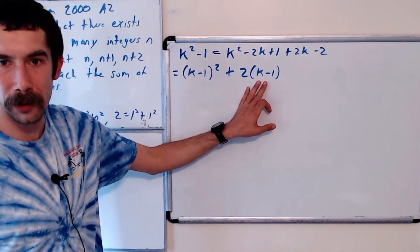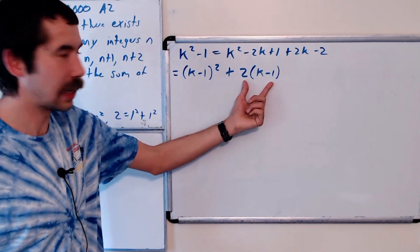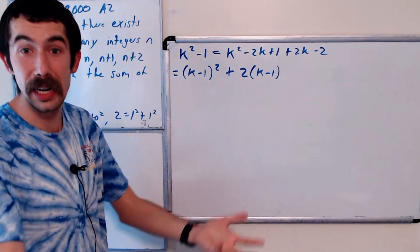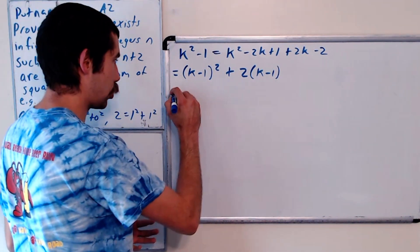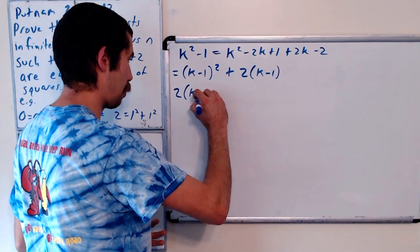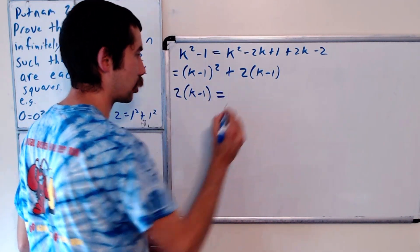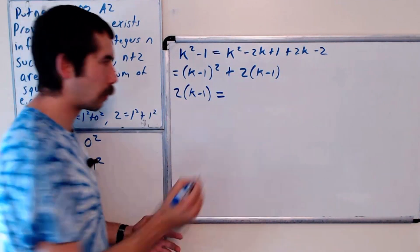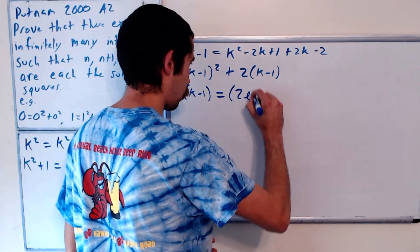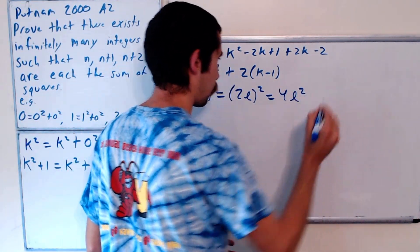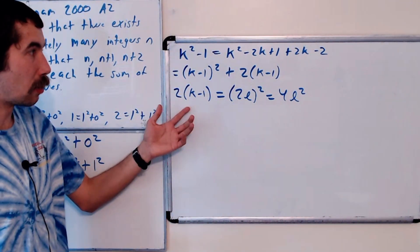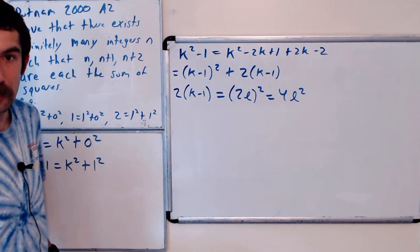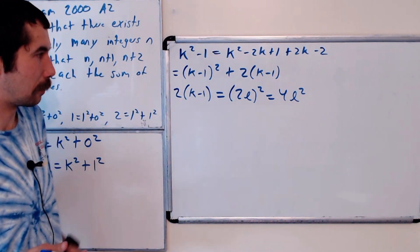Well, if this is a perfect square, this is an even number. So if it's a perfect square, it's an even perfect square. So it's an even number squared. So 2 times k minus 1 is going to be equal to some even number. Let's call it 2l squared, which is equal to 4l squared. And now let's just solve for k in terms of l, and then we can write out what the numbers are going to be.